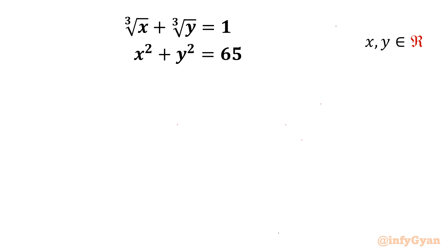Welcome to Infigyan friends. Today in this video we are going to take up one very interesting system of equations. The given equations are: cube root of x plus cube root of y equals 1, and x squared plus y squared equals 65. We have to find out all real solutions. Let's get started by writing equation number 1 and equation number 2.